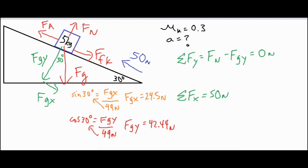One thing to be careful about: although the 50 newtons is pushing it upwards, that doesn't automatically mean the object is going up the ramp. We know it's going up because fgx opposing it down the ramp is only 24.5 newtons. If fgx were higher than 50, the object would still slide down despite the applied force. Since 50 newtons wins, we call it positive and fgx is in the negative direction.